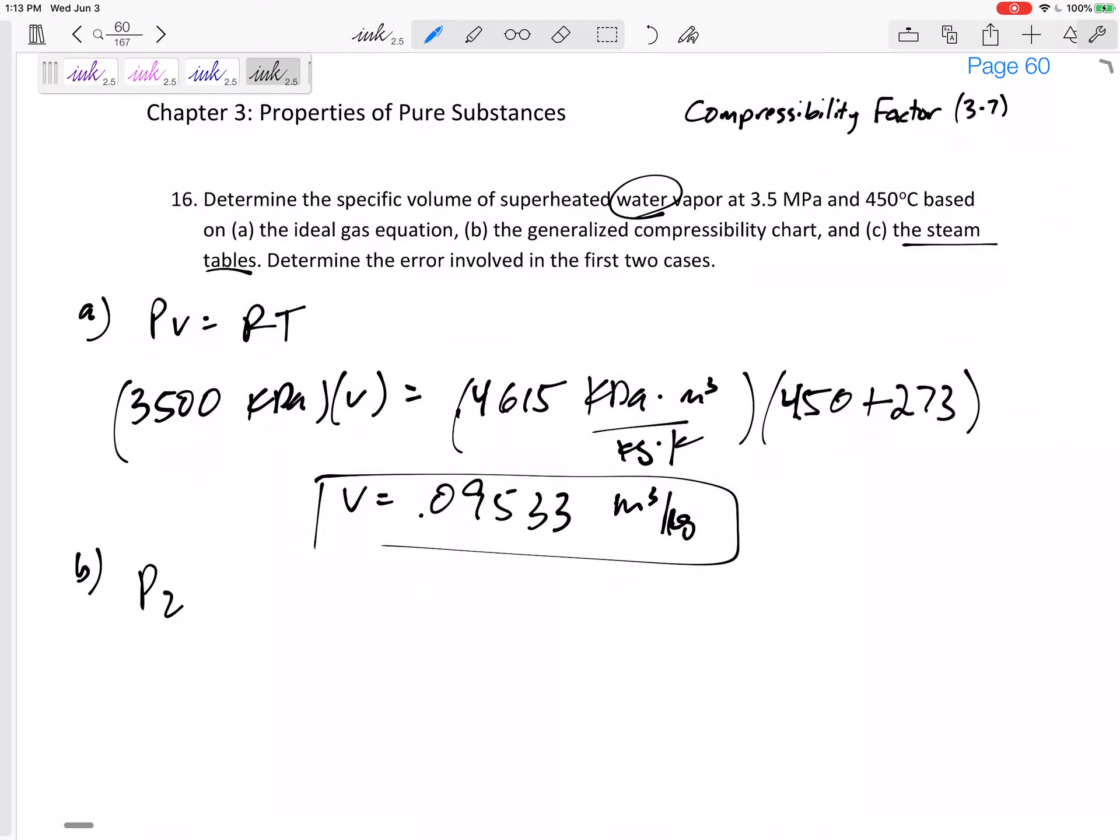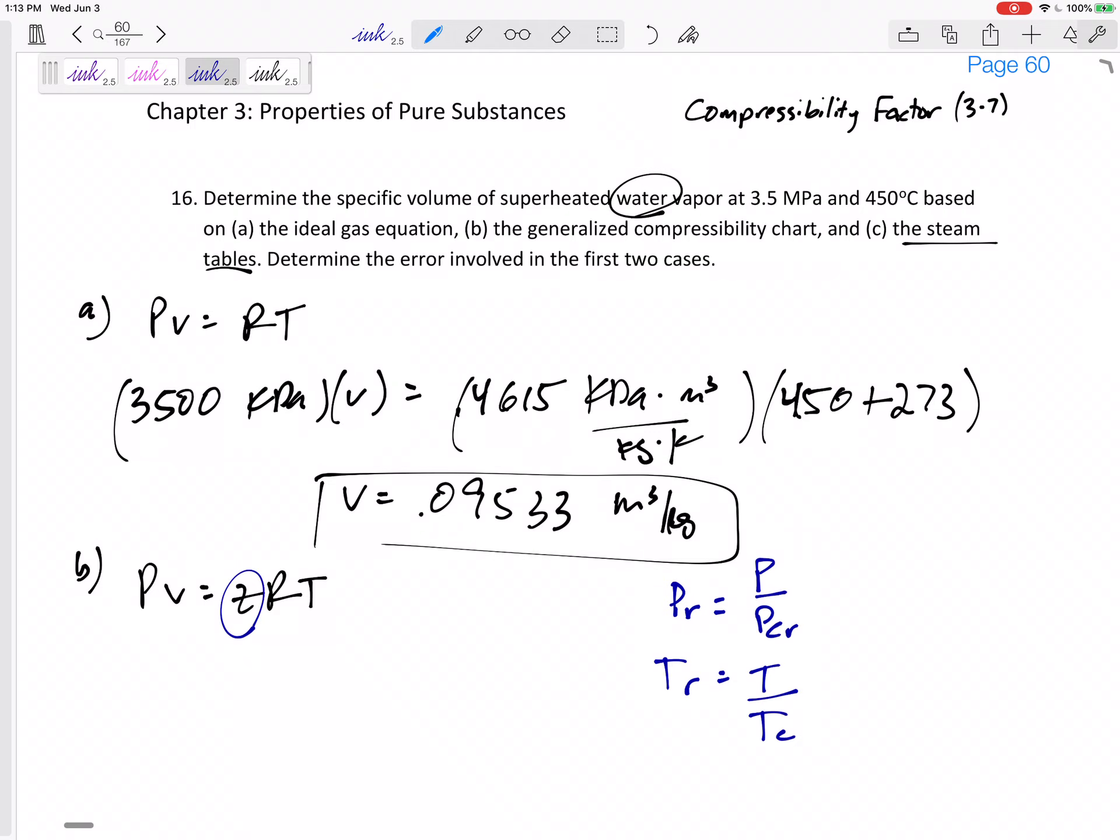All right, but what if we could use that compressibility factor from table A15, that Z, and calculate a new V? Well, for the chart A15, we need PR and TR. PR is the actual P over the critical P, the actual T over the critical T. So I need to go back to table A1 and get the critical pressure and the critical temperature.